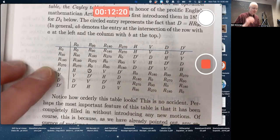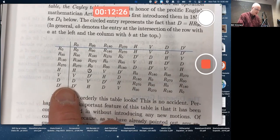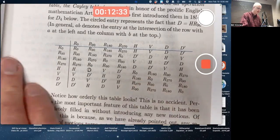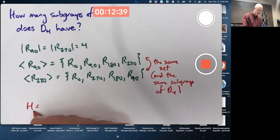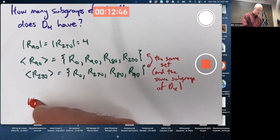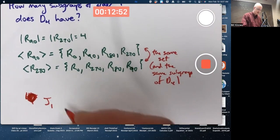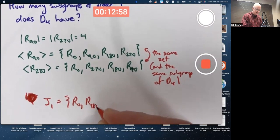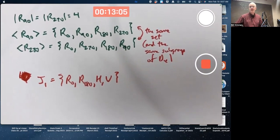So maybe that should make alarm bells go off in your mind. Maybe if we include R0, H and V, and R180, maybe that's a subgroup of order 4. So we're not really proving it, but let's give it a try. Let me call it J1. If J1 consists of R0, R180, H and V, it's got R0. It's got four elements.